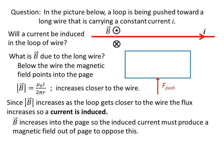Let's figure out the direction. B is increasing into the page, so the induced current must produce a magnetic field out of the page to oppose this.